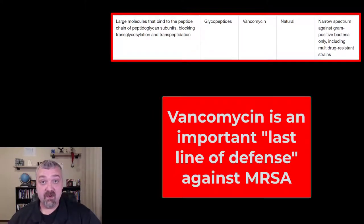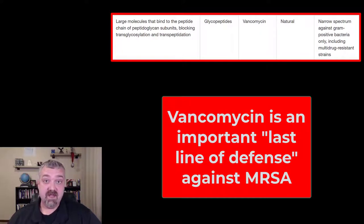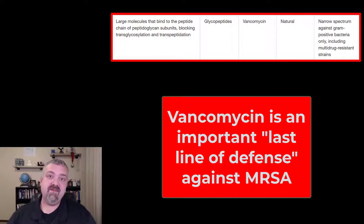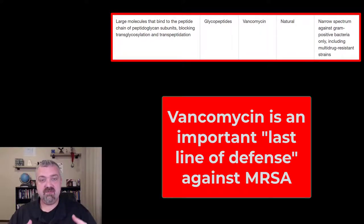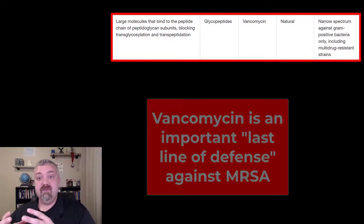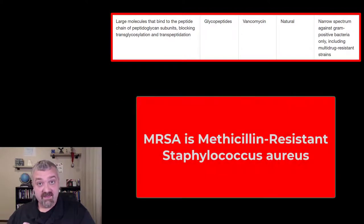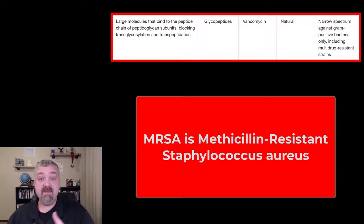First of all, the name comes from the word vanquish. This antibiotic was developed to deal with methicillin-resistant organisms. We flooded the world with penicillin and bacteria responded by developing penicillinases or beta-lactamases — the molecular scissors, the enzymes that chop up penicillin and that nucleus. So then we threw methicillin at them and they developed MRSA, methicillin-resistant Staphylococcus aureus.